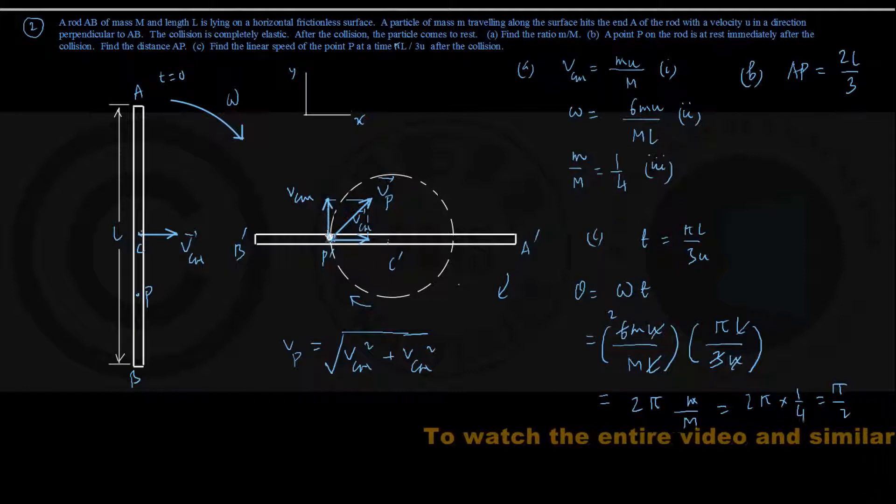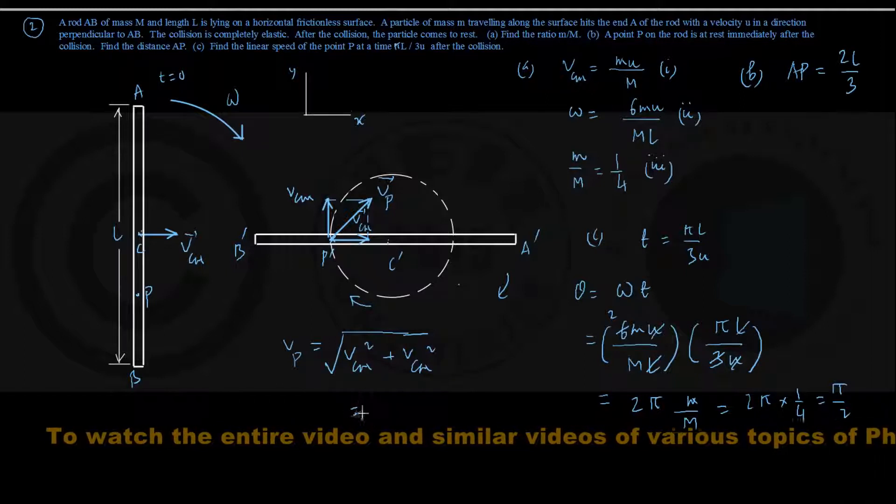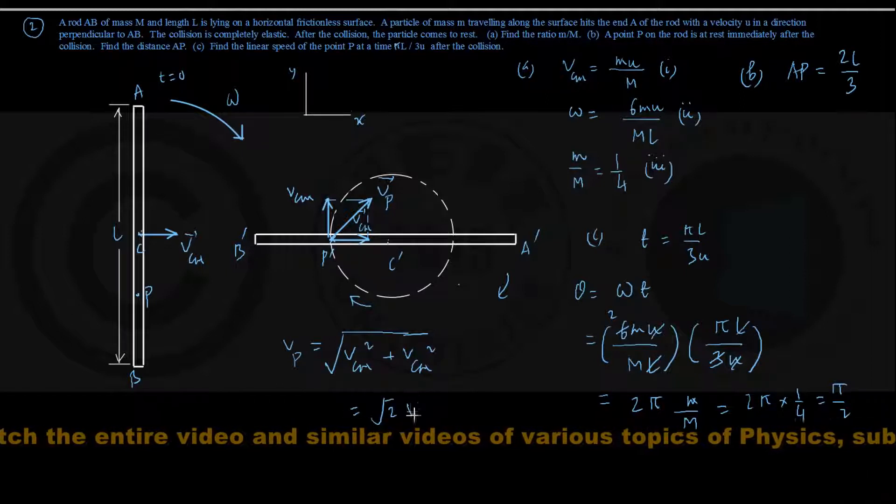There are two components of magnitude VCM which are mutually perpendicular. Therefore, VP is given by simply square root of 2 into VCM.